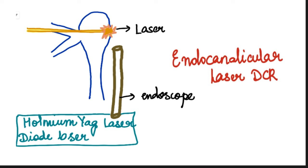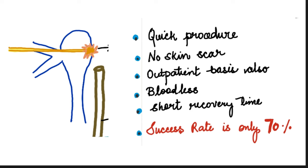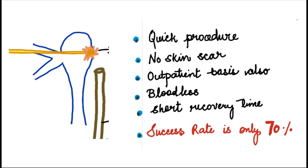When a surgeon employs a laser to carve an opening via the canaliculus into the lacrimal sac, creating an ostium into the nose, this procedure is referred to as endocanalicular laser DCR. The lasers used include the holmium-YAG laser and the diode laser. This method is fast, does not result in scarring since there is no skin incision, and is a bloodless procedure safe for elderly individuals on anticoagulants, with a brief recovery period. However, it has a notably lower success rate — just 70% — compared to external and endonasal DCR.